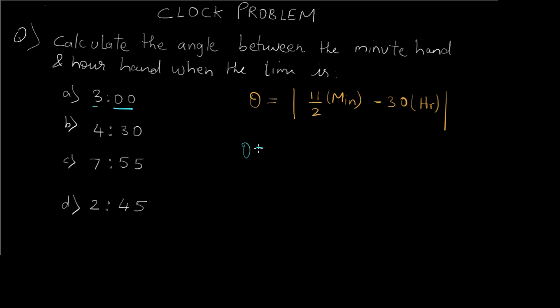Now let's see the second question. For the second question we have theta equals 11 upon 2 into the minutes are 30, minus 30 into the hour hand is at 4. So this would be 11 into 15 minus 120, and we have to take a mod of this, so that would be 165 minus 120, and that would ultimately give us 45 degrees.